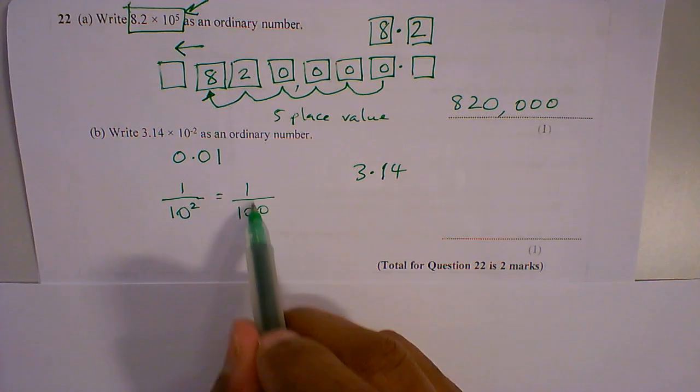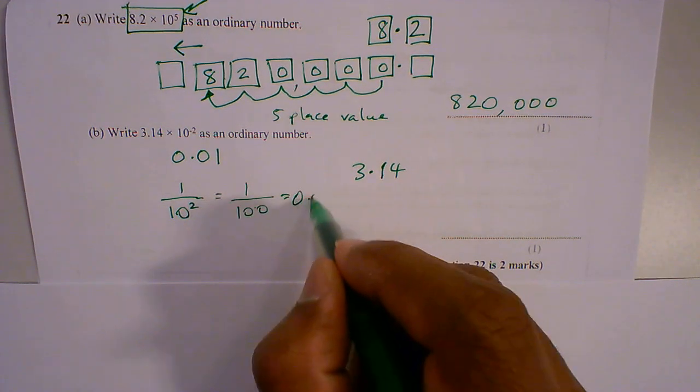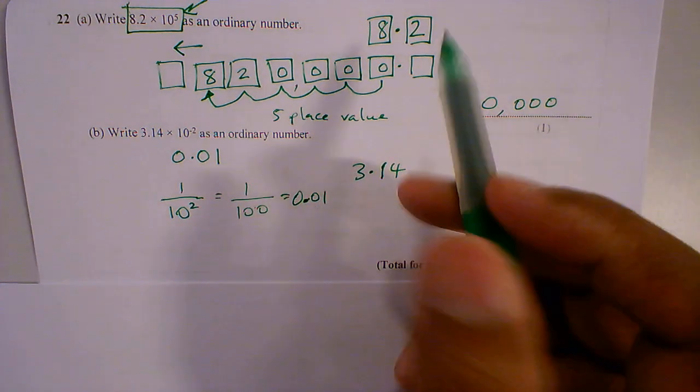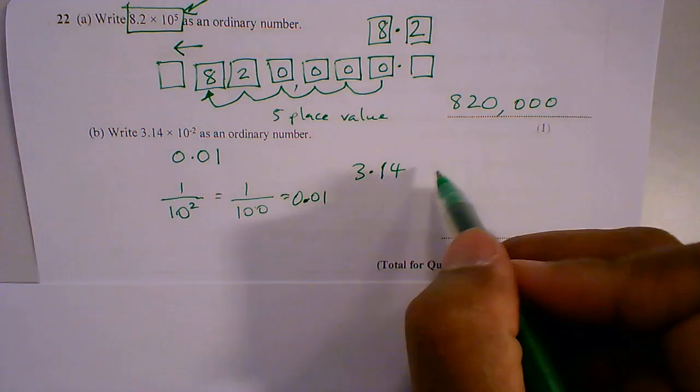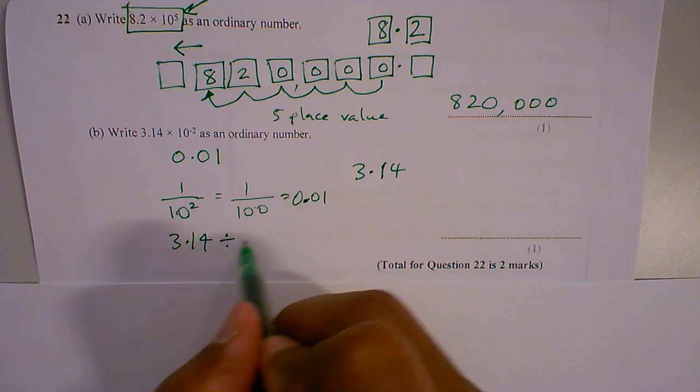In other words, you're dividing by 100, so that is equal to 0.01. So what I'm doing is 3.14 divided by 100.